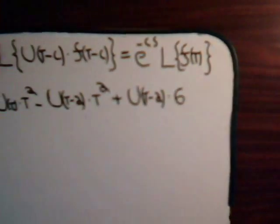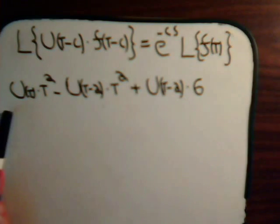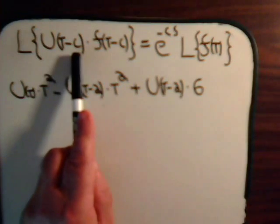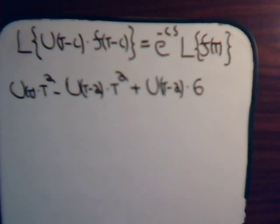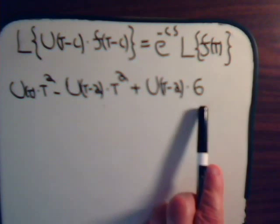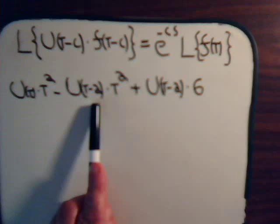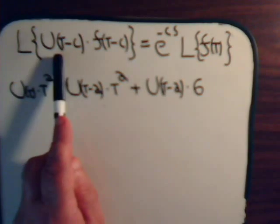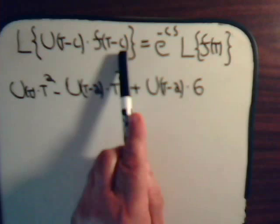Here's our problem — we have this function and we want to find its Laplace transform. The first term, u of t times t squared, is okay because c is 0, so it's just f of t equals t squared. The last term, u of t minus 2 times 6, is also fine since it's just a constant. But the middle term has u of t minus 2 times t squared. To apply the formula, it has to be u of t minus c times f of t minus c — the function must be shifted.